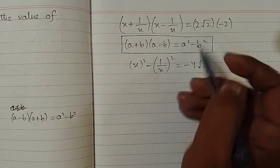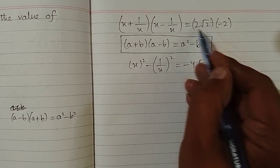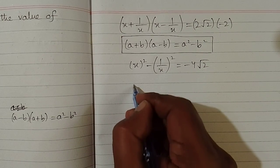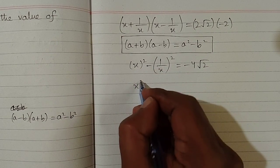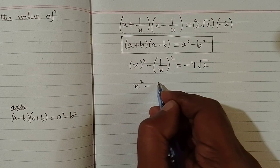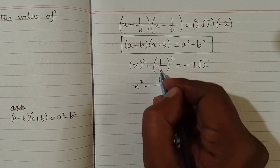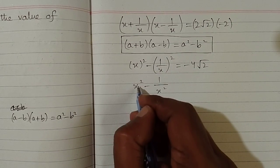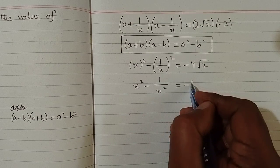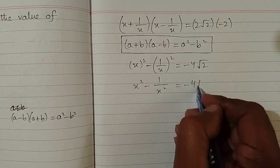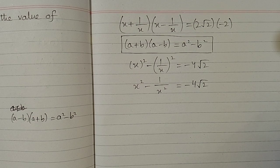Because 2 multiplied by minus 2 is minus 4, and the root remains the same. So the value of x square minus 1 upon x square is minus 4 square root of 2, and this is the required answer.